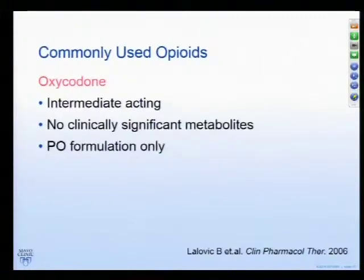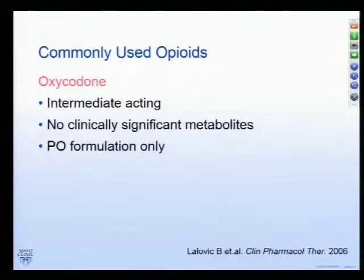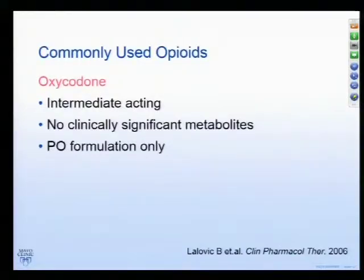Oxycodone, part of Percocet, is intermediate-acting with no clinically significant metabolites — even though one metabolite is oxymorphone, which is a very strong opioid — but it's only available in PO form.